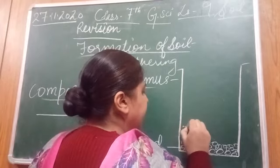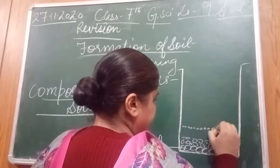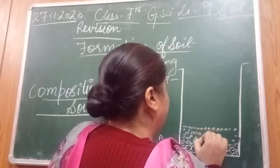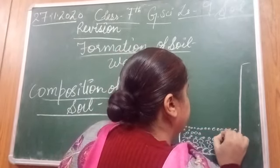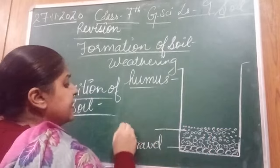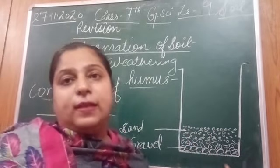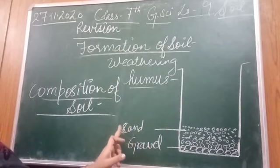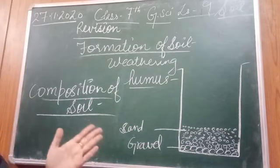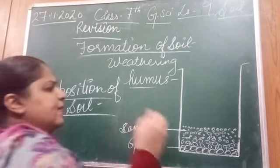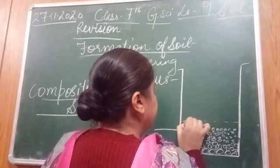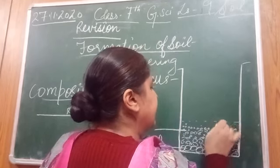The particles of sand are lighter than gravel but heavier than the other constituents. Above sand there is a layer of silt — silt has a very thin layer with a smaller diameter than sand particles. Above the sand there is silt, and there is a notable difference in the diameter of sand and silt particles.